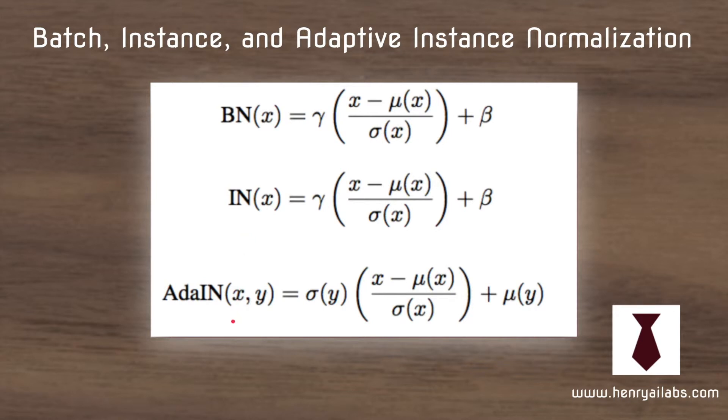And then different from this idea, the AdaIN layer will parameterize the mean variance terms based on two different feature activations. So the mean of the Gaussian is defined by the mean of the y features and the deviation is defined by the deviation of the y features.